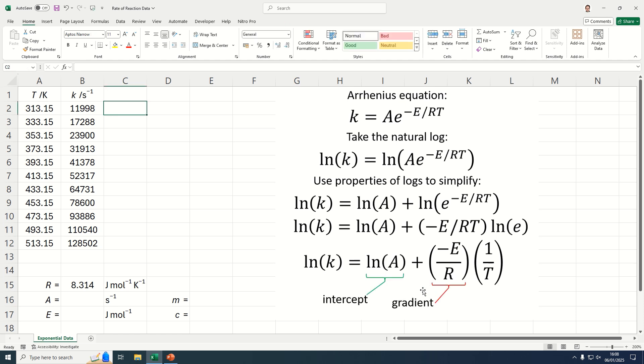So if we plot a graph of natural log of k on the vertical axis and 1 over T on the horizontal axis, the intercept will be the natural log of A and the gradient will be minus E divided by R.